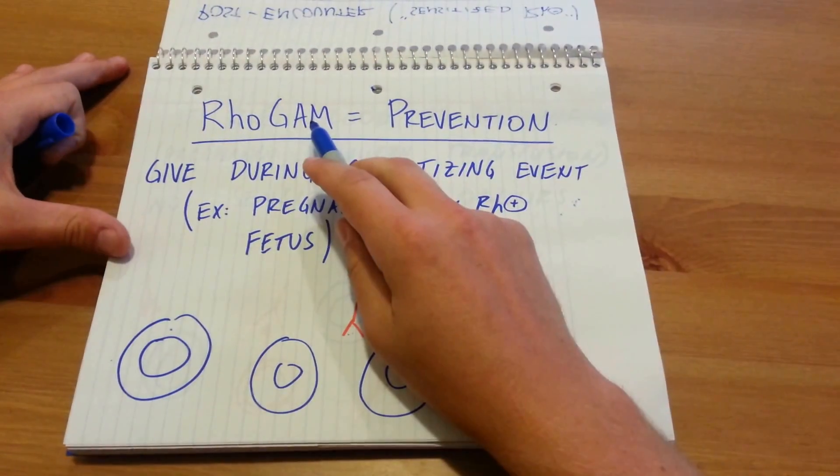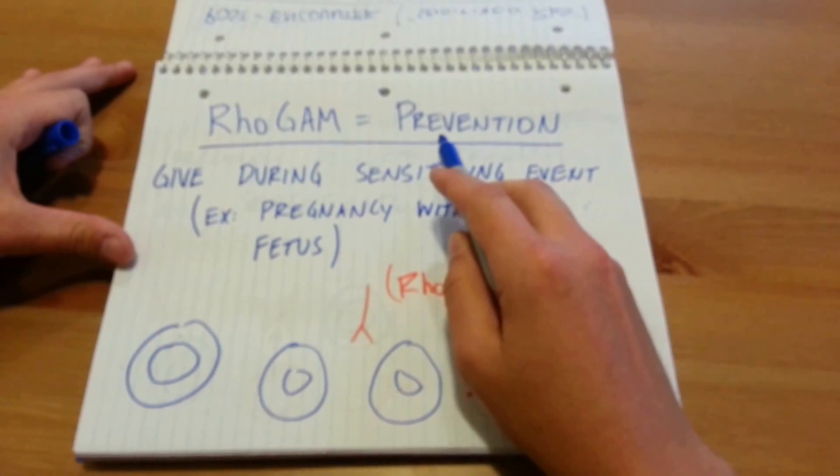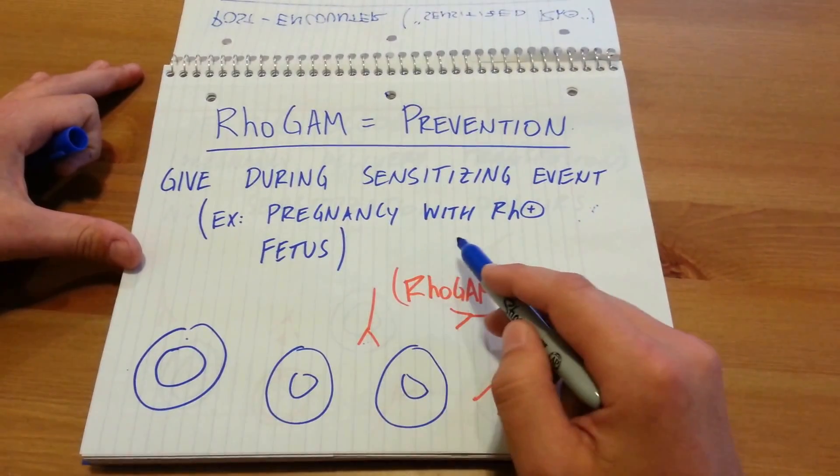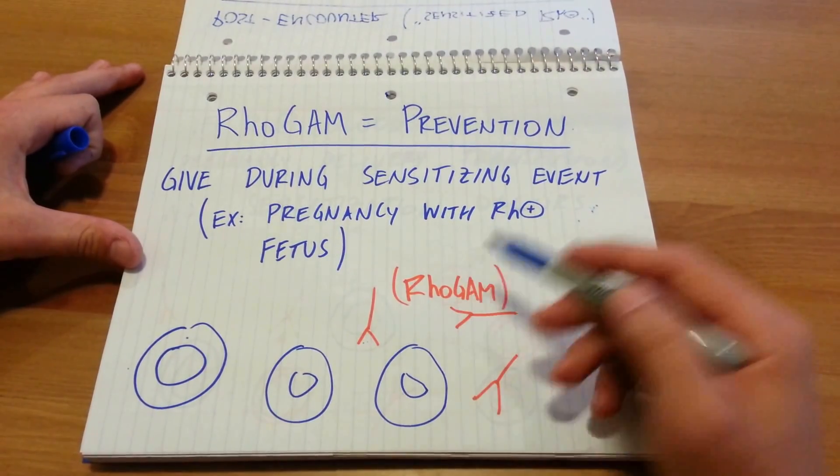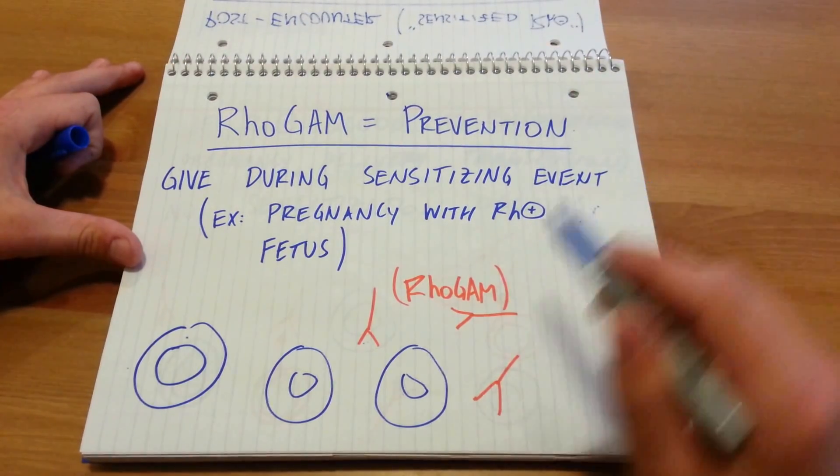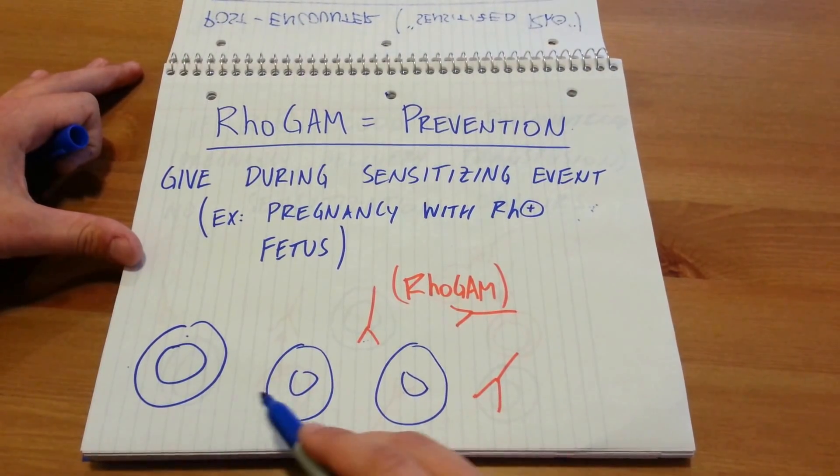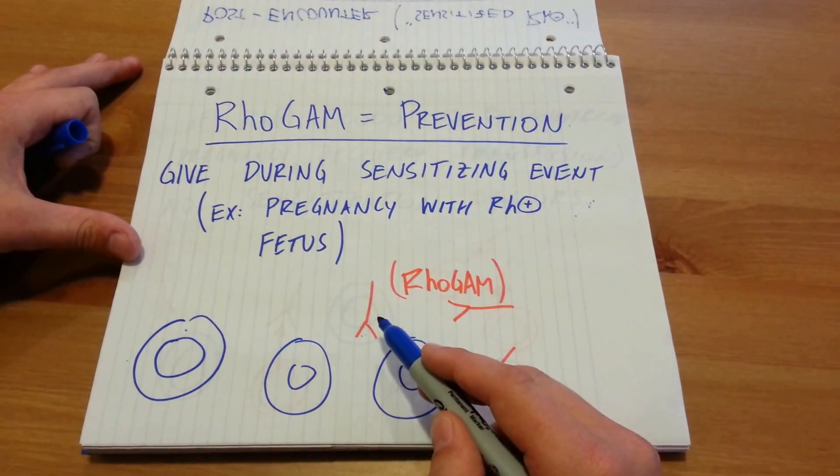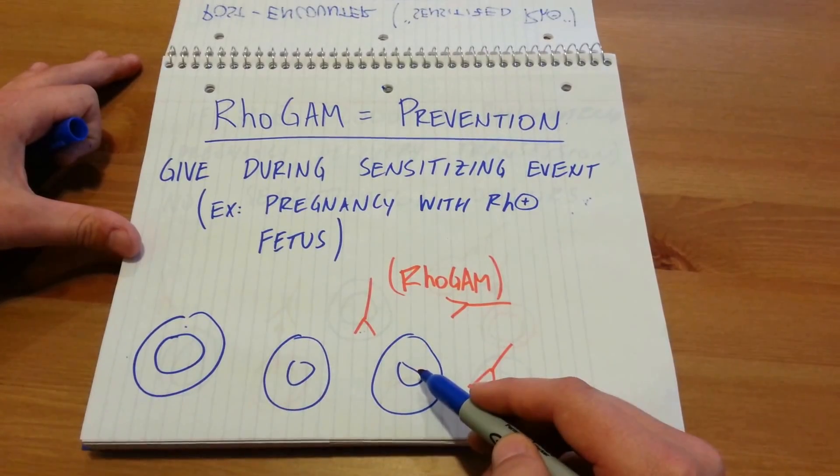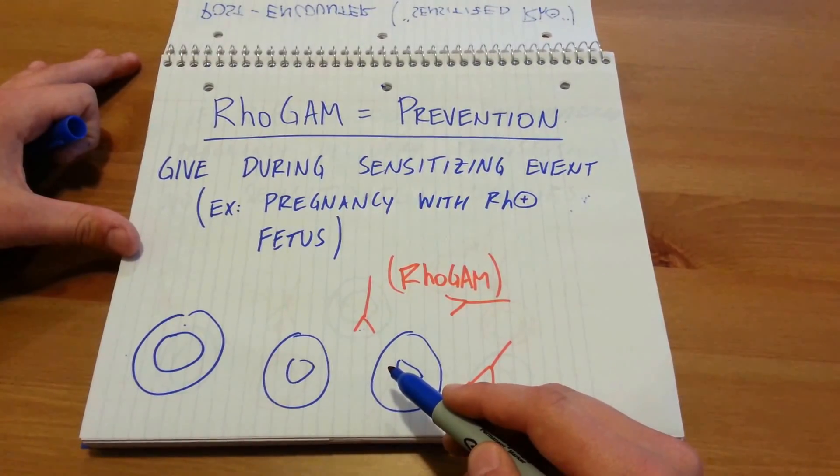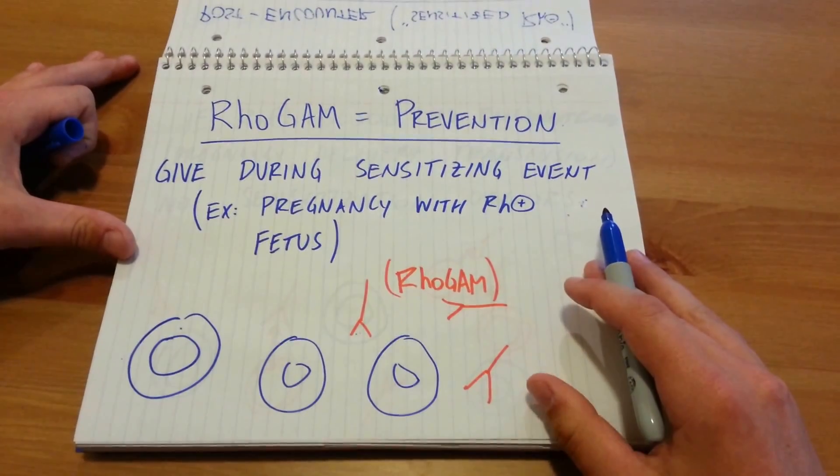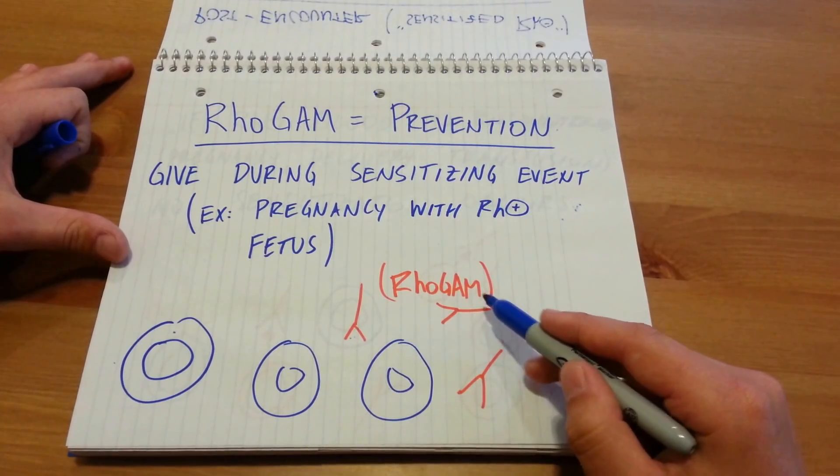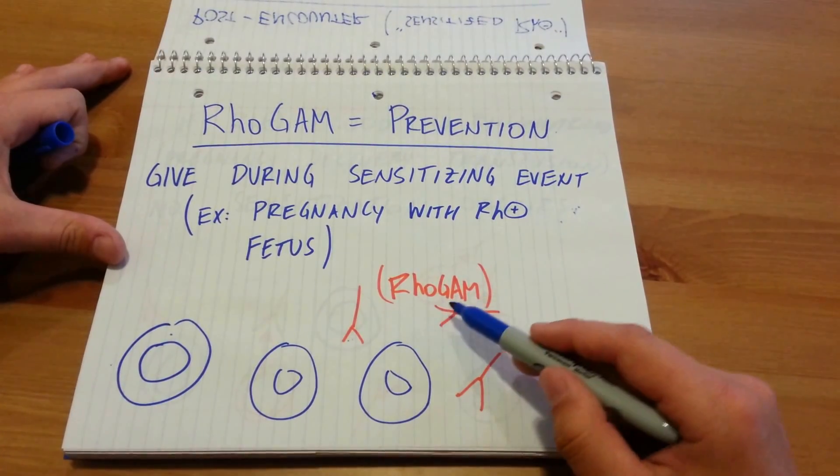And this is why we give the drug called RhoGAM to pregnant mothers who are RH negative. We give it during or before a sensitizing event. So we give it during pregnancy if you have an RH positive fetus, or if you're about to have a blood transfusion and you're RH negative. And essentially what RhoGAM is, is here are your RH negative blood cells. We give RhoGAM, which are synthetic, made from outside source antibodies. Thus, you don't have to make your own antibodies. In fact, your immune system is fooled into thinking that everything's great and kosher. There's no need to make your own antibodies because we have these outside sourced ones. That's what RhoGAM is. It's a Rho immunoglobulin, but it's given via injection.